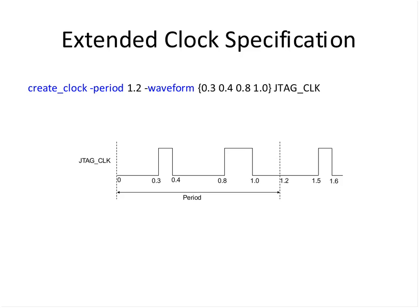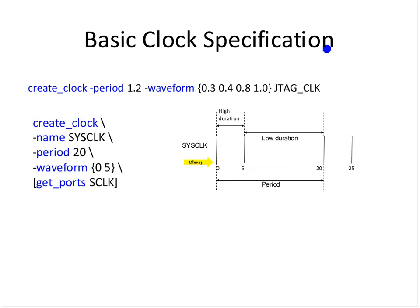You can explore the create_clock manual — there are many more options. There is also the command create_generated_clock which we will see later; it has more options than create_clock. These are the two most important applications. First you give the period — most important — then you define the waveform, and then you specify at which node the clock has to be created.